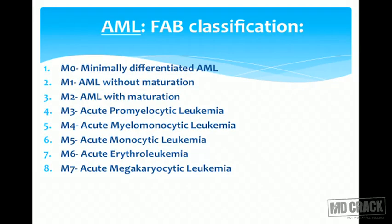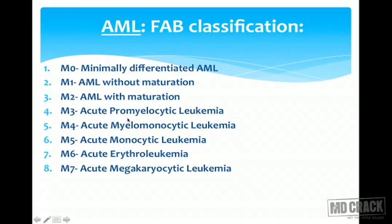AML is classified into eight categories by FAB classification, accepted by WHO. M0 is minimally differentiated AML; M1 is AML without maturation; M2 is AML with maturation (good numbers of promyelocytes and metamyelocytes); M3 is acute promyelocytic leukemia, where you see predominantly promyelocytes along with myeloblasts. M3 is a favorite for exams and will be discussed in detail.